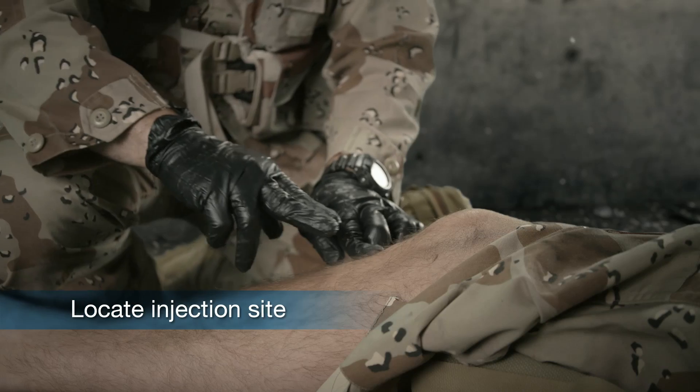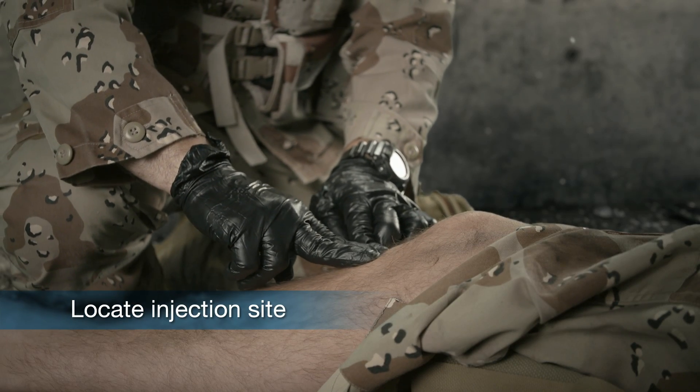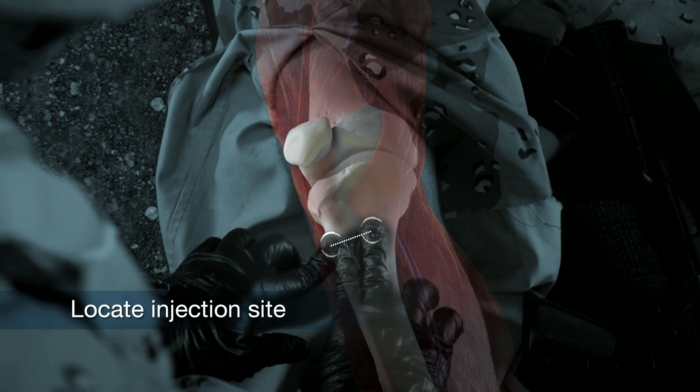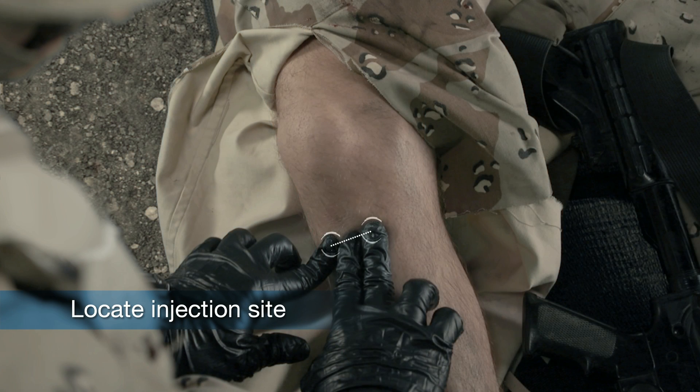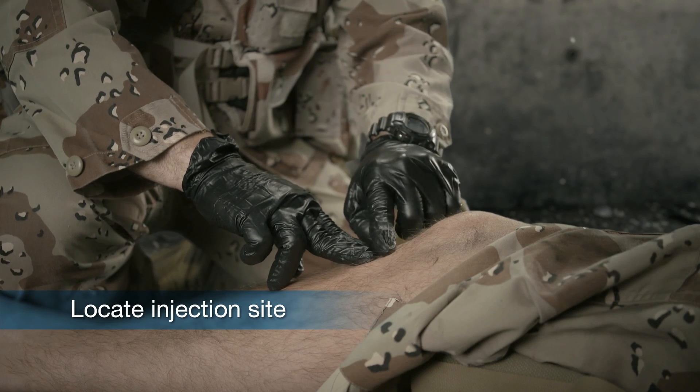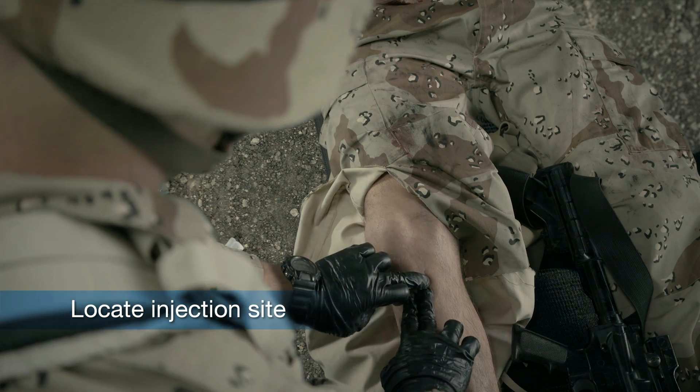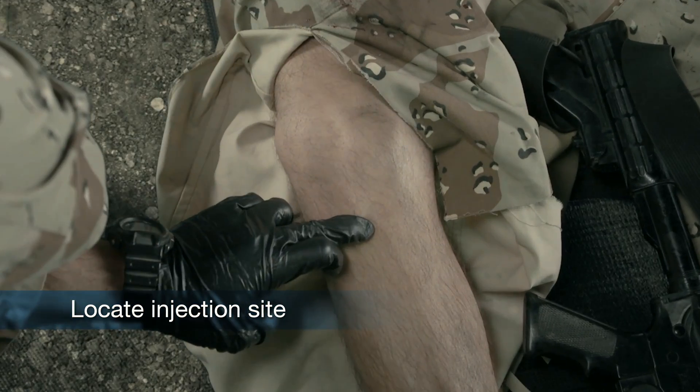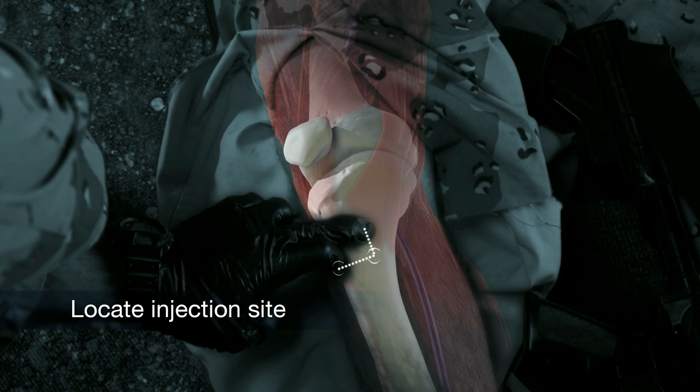This is the tibial tuberosity. Move approximately two fingers toward the inner part of the leg to find the medial flat portion of the bone. Now move up approximately one finger toward the kneecap. This is the correct location.